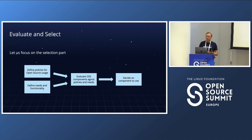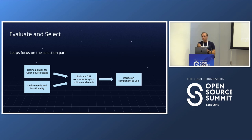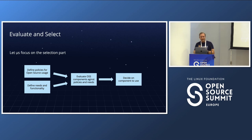I want to narrow this down to focus on the first part: what can we do when we evaluate and select open source components? You find policies for open source usage — what are the rules and minimum requirements? In parallel, define the needs and functionality. Then evaluate candidate components against policies and needs, and decide on which component to use.